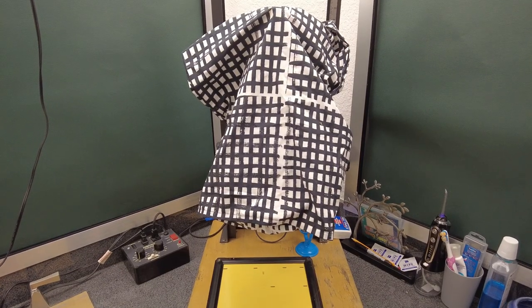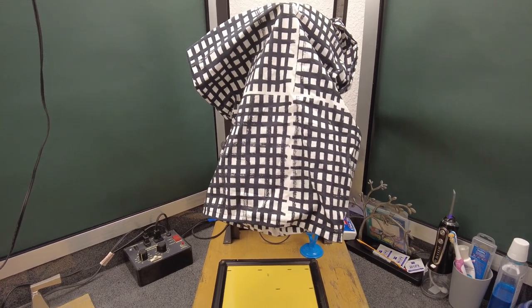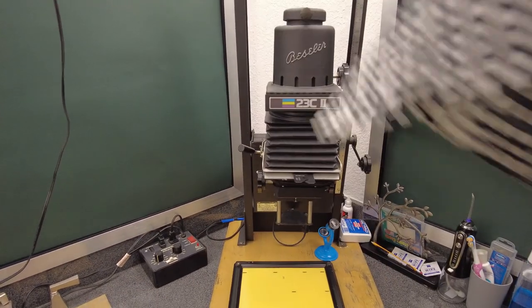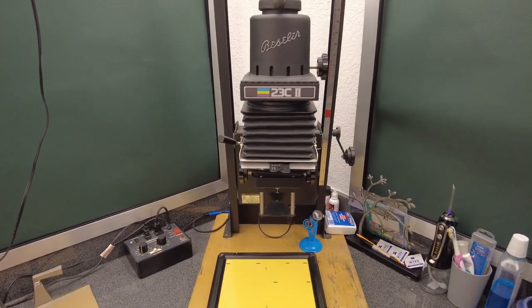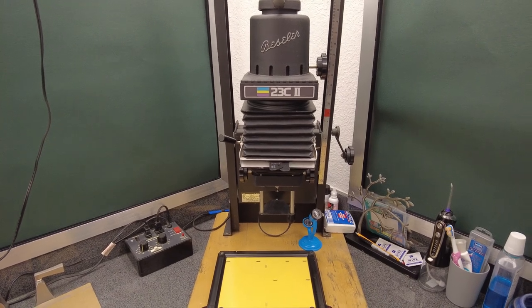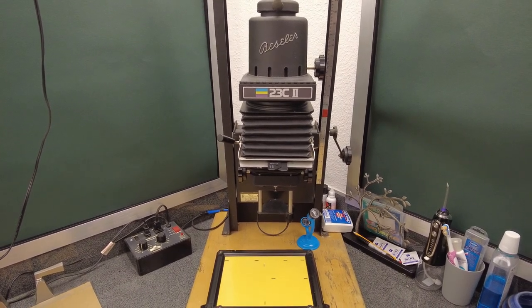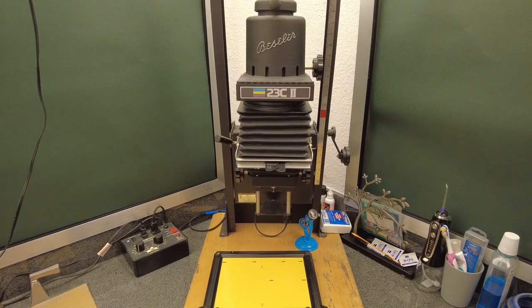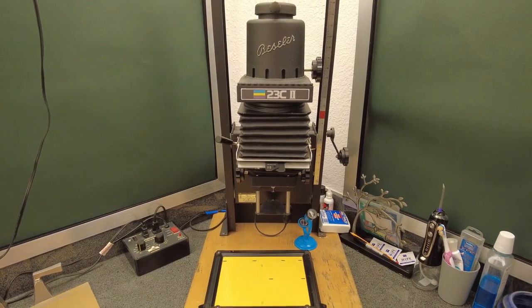The most important thing for your dark room is your enlarger. So here's our Beseler and that was a dust covering. We deal with both dust and animal fur and that makes it so we don't have to clean it quite so often.